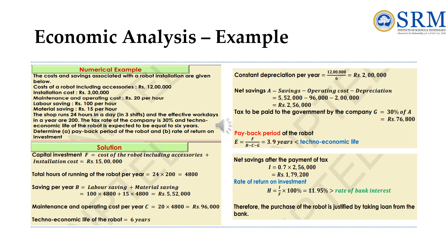Now we calculate the rate of return on investment. Modified net savings after payment of tax (I) = 0.7 × ₹2,56,000 = ₹1,79,200. From which the rate of return on investment is calculated as 11.95%, which is greater than the rate of bank interest. Therefore, the purchase of the robot is justified by taking a loan from the bank. Thank you.